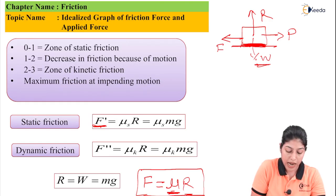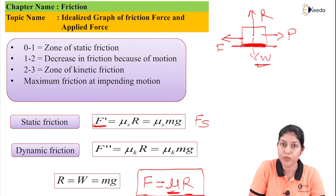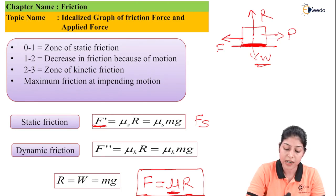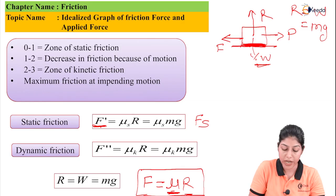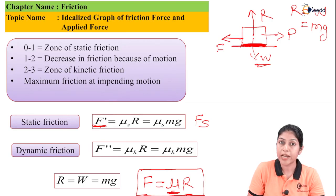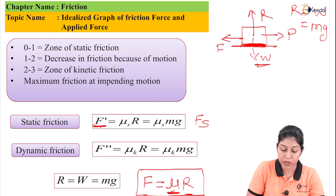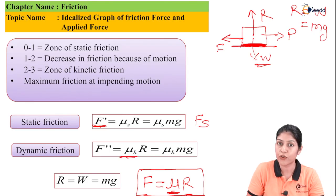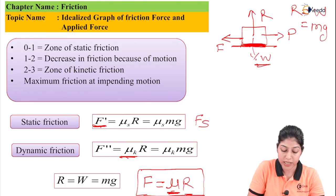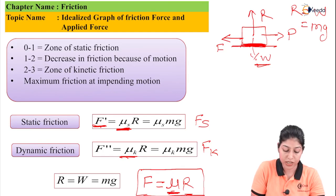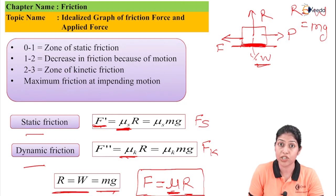This is the general formula of friction. For static friction, it is represented as Fs or F' = μs·R = μs·Mg, because R equals W equals Mg, where M is the mass and G is the gravitational acceleration. For dynamic or kinetic friction, the equation is F'' = μk·R = μk·Mg. Here μk represents the coefficient of kinetic friction and μs represents the coefficient of static friction. F'' can also be written as Fk. These are the equations for static friction and dynamic friction, with R = W = Mg.